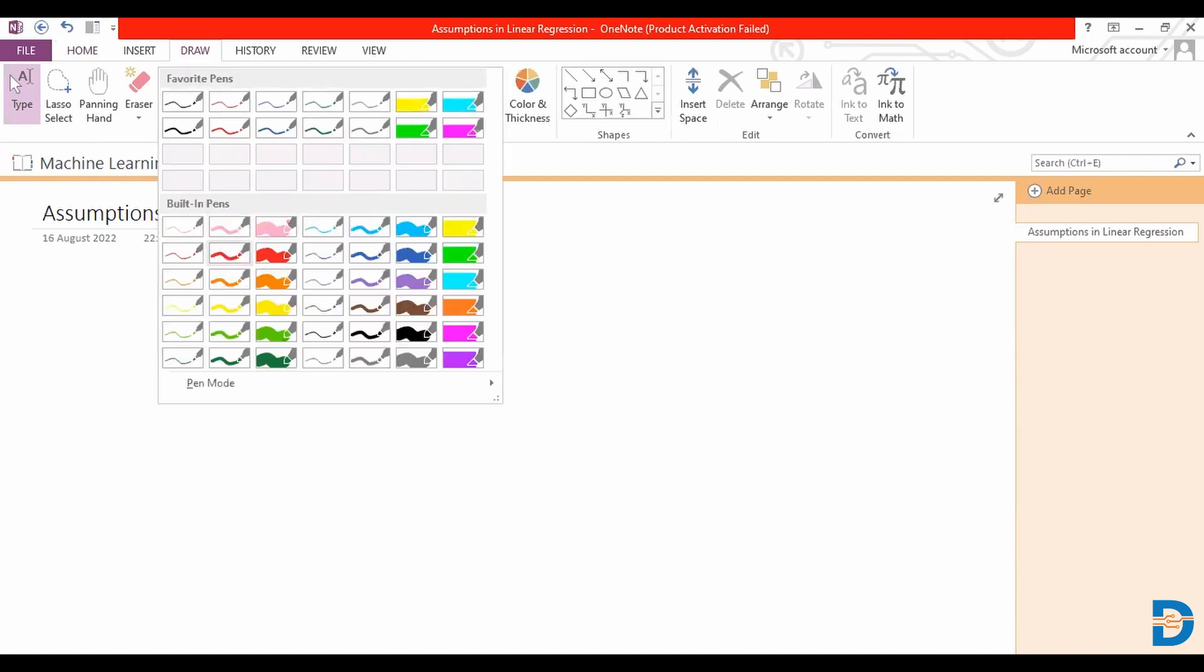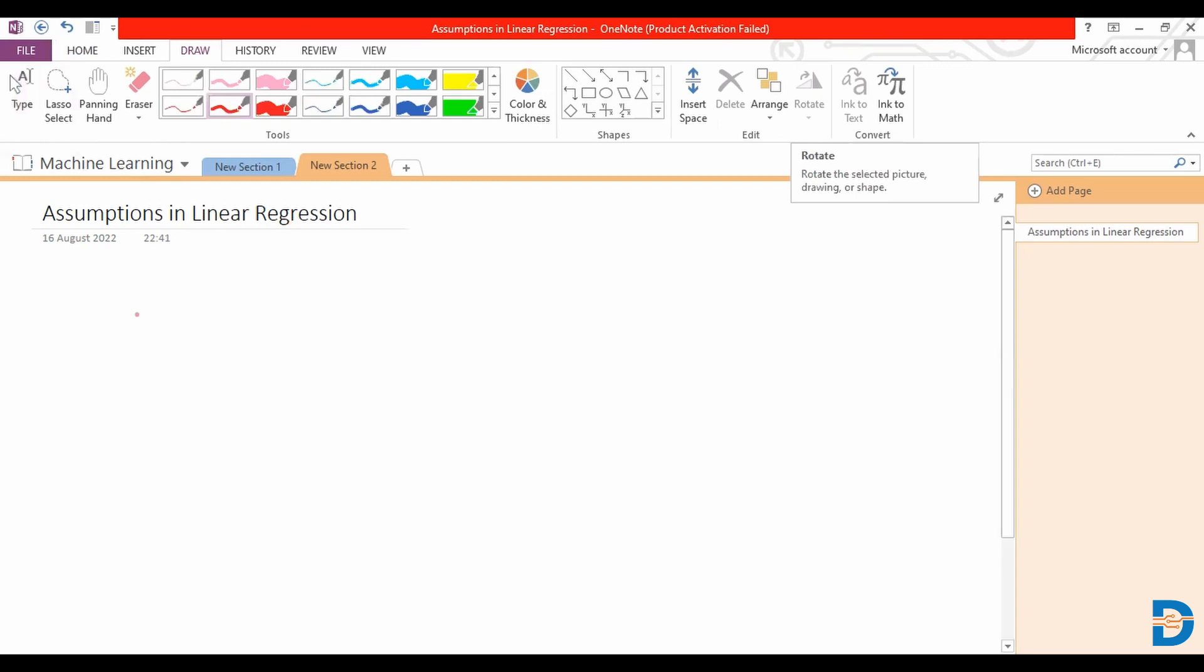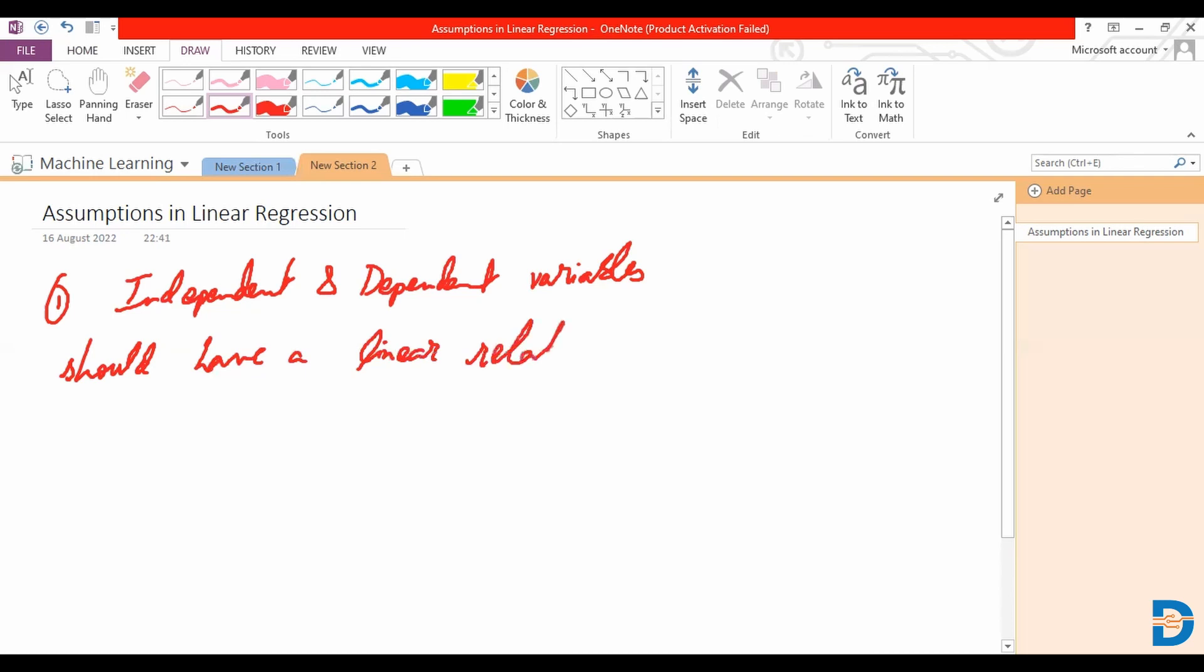We would be looking at a linear relationship between our independent and dependent variables. So we could say our two variables or we could just call them as independent and dependent variables should have a linear relationship, or in other words the linear relationship is able to explain how x and y are related so y is equal to mx plus c.